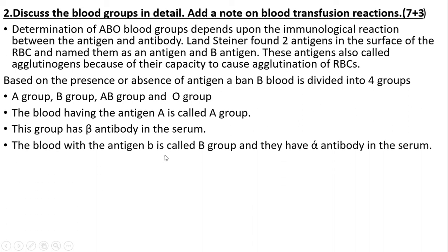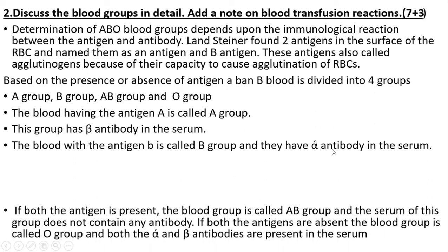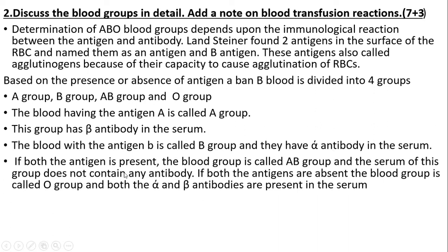The blood group with B antigen is called B group and they have alpha antibody in the serum. If both antigens are present, the blood is called AB group and the serum of this group does not contain any antibody. If both antigens are absent, the blood group is called O group; they have both alpha and beta antibodies present in the serum.